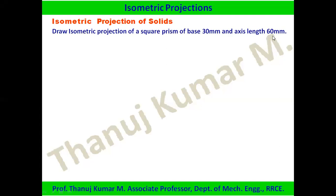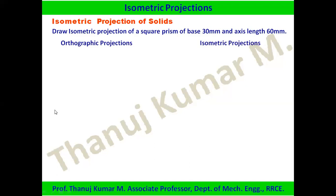Whenever we are drawing any solid, we must first draw the orthographic view and then start with the isometric projections. To begin the orthographic view, start with the top view and then the front view. We draw the XY line, represent VP and HP as the first quadrant, and then draw a square.